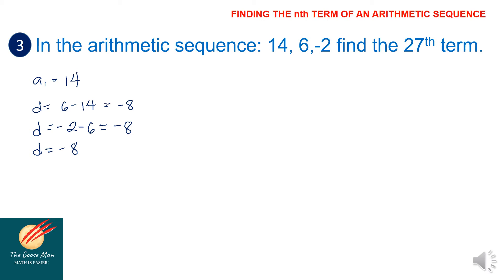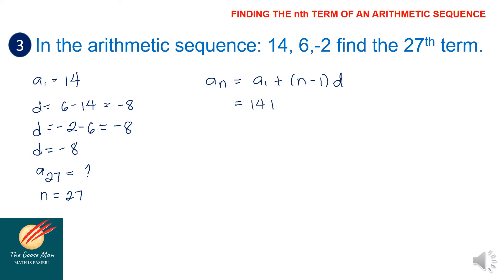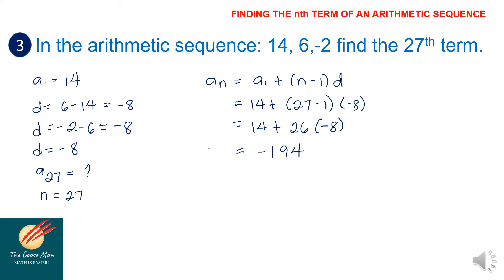We want to find a sub 27, the 27th term, which is unknown. Since we have a sub 27, n equals 27. Using the formula: a sub 27 equals 14 plus (27 minus 1) times negative 8, which gives 14 plus 26 times negative 8. The final answer is negative 194.